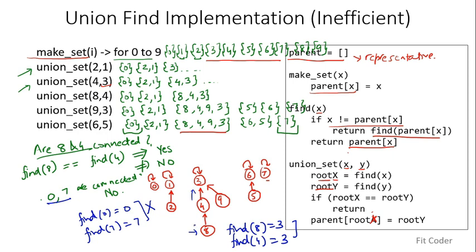There is one major issue with this simple implementation: the tree height can be very large because we are not rearranging the tree at any step. It is common to have a very tall tree, making the find operation expensive — O(n) in the worst case if all elements are in a single line. To optimize this, we have two techniques that can bring down the complexity to almost constant.